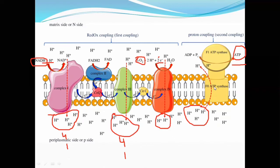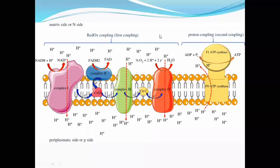When the electrochemical gradient is developed and four protons are transported to the F0 subunit into the matrix, conformational changes in the ATP synthase result in ATP production. So for NADH, through complex 1, complex 3, and complex 4, the protons are transported and then passed through ATP synthase, giving 2.5 ATP production.